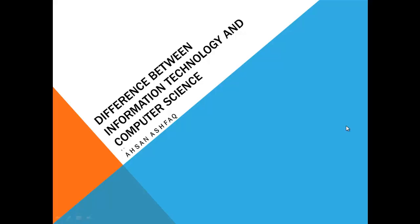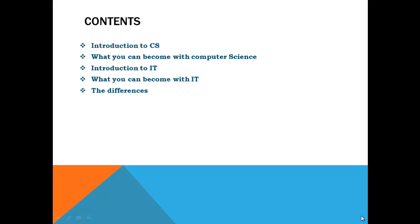One more thing: in order to understand my tutorials or lectures, you will be required to have a notebook and a pen so that you can note down some important points. So these are the contents of today's lecture. We are going to differentiate between computer science and IT. First, we will introduce computer science and see the basics, then I'll tell you what you can become if you are associated with computer science. Then we will introduce information technology, what you can become in that field, and finally the major differences between these two.